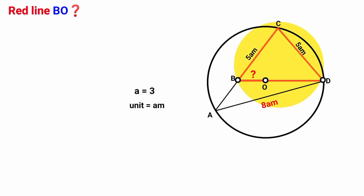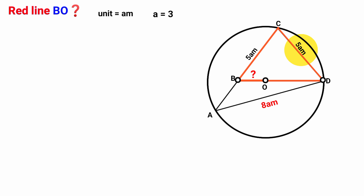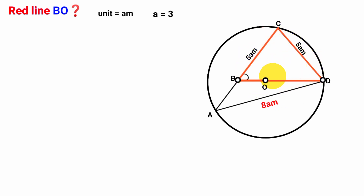Now look at this triangle BCD. We have the length of this side to be 5A meters and this side is also 5A meters. That is, this triangle is an isosceles triangle. In an isosceles triangle, we know the angles facing the congruent sides are also equal. So if we assume the size of this angle to be N, this must also be N.